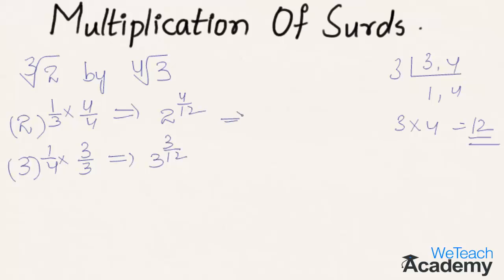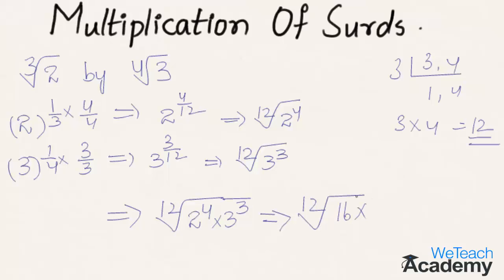We can write this as 12th root of 2 raised to the power 4, and 12th root of 3 cubed. Now let us multiply both: 12th root of 2 to the power 4 into 3 cubed. This gives us 12th root of 16 into 27, which equals 12th root of 432.